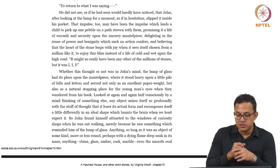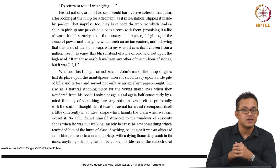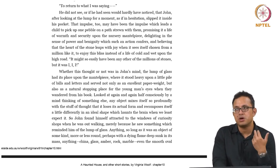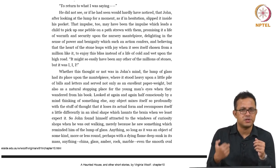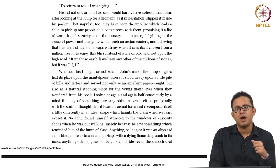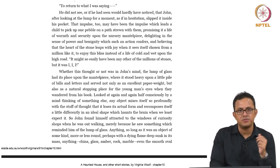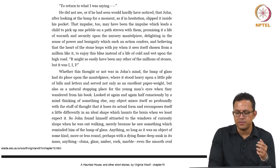John found himself attracted to the windows of curiosity shops when out walking, merely because he saw something which reminded him of the lump of glass. Notice how from this point in the story John becomes almost voyeuristic — anywhere he goes, whenever he passes a window, he finds himself attracted to little objects which remind him of the original object picked from the seashore. We can see the beginning of fetish formation here: his engagement with solid objects begins to reshape his imagination and deviate away from the mainstream narrative of consumption and progress.